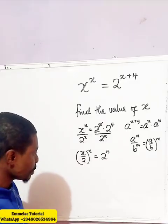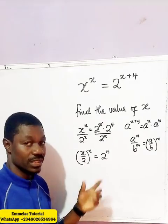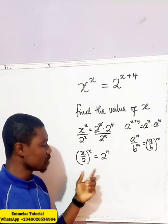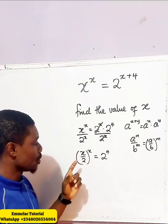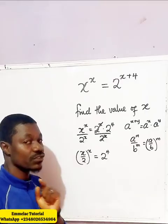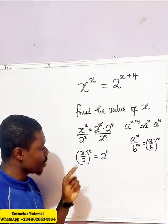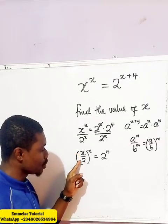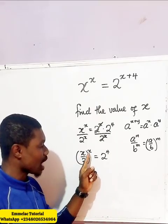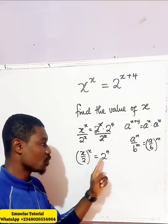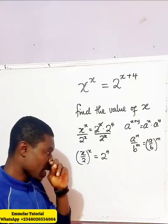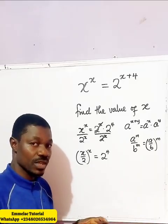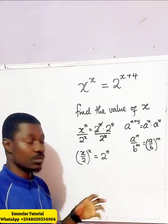By mere observation it is logical to say x is 4, because plugging in 4: 4 over 2 gives us 2, and the exponent is 4, which is consistent. However, I want to simplify further to be certain.